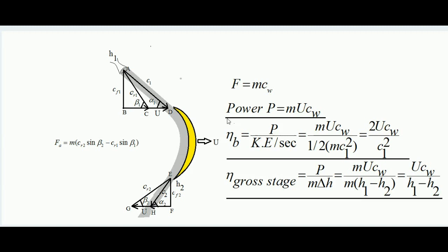Gross stage efficiency is defined for one stage, which consists of one nozzle (or nozzle ring) and one blade (or blade ring). It is the ratio of power developed over the blade to the enthalpy input per second to the stage. If enthalpy at the nozzle inlet is h1 and at the blade outlet is h2, then enthalpy input per second is m·(h1 − h2). So gross stage efficiency = m·u·cw / [m·(h1 − h2)] = u·cw / (h1 − h2).